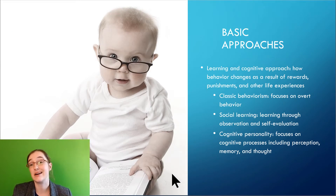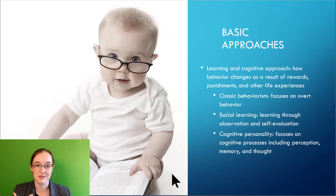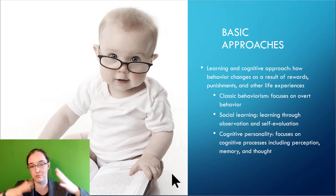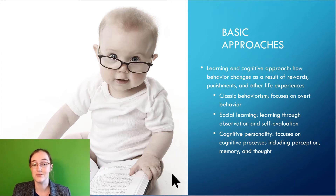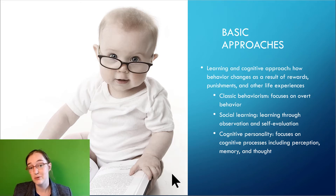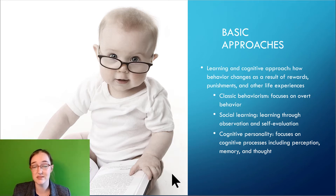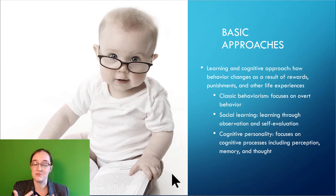Another basic approach is the learning and cognitive approach — it's about how behavior changes as a result of rewards, punishments, and other life experiences. Classic behaviorism focuses on overt behavior and how those behaviors are affected by rewards and punishments. Social learning focuses more on learning through observation and self-evaluation, while the cognitive personality approach focuses on cognitive processes including perception, memory, and thought — essentially the mechanisms through which personality is expressed.